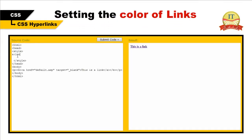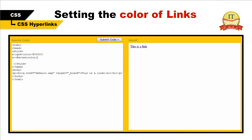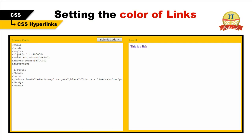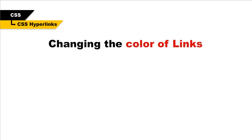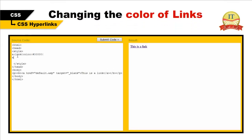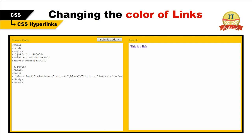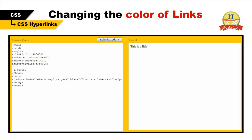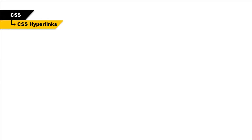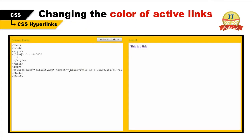Setting the color of links: the following example demonstrates how to set the link color, with possible values being any color name in valid formats. Changing the color of a link: the following example demonstrates how to change the color of a link when you mouse over it. Changing the color of active links: the following is an example of how to change the color of active links, with possible values being any color name in valid formats.